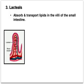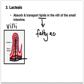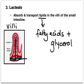The third structure within the lymphatic system is the lacteal. As discussed in the digestive system, the lacteal is located within the villi of the small intestine, alongside the blood vessels. Its job is to transport lipids — broken down by lipase into fatty acids and glycerol — from the small intestine into the lymph.